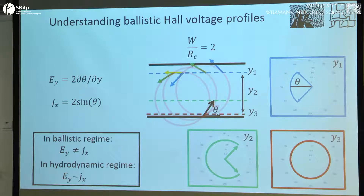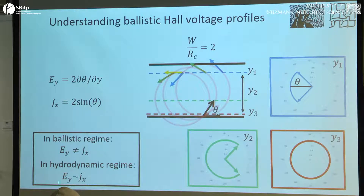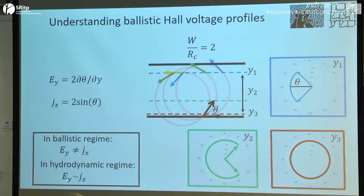Due to the restoration of locality from electron-electron interactions in the hydrodynamic regime, EY and JX become the same again. So in the ballistic regime, EY doesn't represent the current; but in the hydrodynamic regime, if you measure EY you can really measure JX. What we'll do now is show measurements of EY, show how they're different in both the ballistic and hydrodynamic regimes, and then argue that because we are in the hydrodynamic regime, this EY is actually JX.